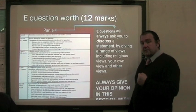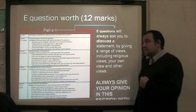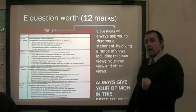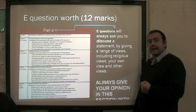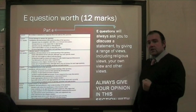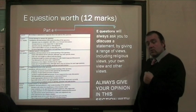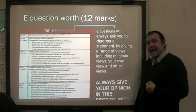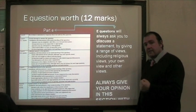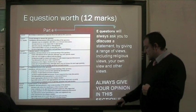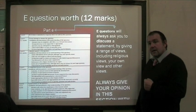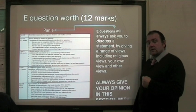E questions are the most important — worth double D at 12 marks. You will be given a statement and asked to discuss it. To get the higher marks you need to very clearly give your reasons, and in this question you do give a personal opinion — you have to, to get the higher levels. You also have to give a religious view with clear reasons using quotes, and it would be good to include another view with a reason why somebody might hold that view. You always give your opinion in this section — always — and that will ensure you get the higher level responses.